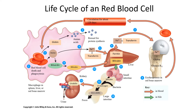Red blood cells don't stick around for very long — after three or four months they're worn out and need to be replaced. Since they lack a nucleus and organelles, they can't repair themselves. They're going to be gobbled up by macrophages — white blood cells that consume foreign cells like bacteria but also worn out or damaged cells. The macrophages are found predominantly in the spleen, liver, and red bone marrow, and they take in these red blood cells and break them down.